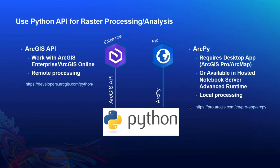Let's do a quick comparison of the different types of Python APIs provided by ArcGIS. There are two main sets of Python APIs offered by ArcGIS products. The first is the ArcGIS API for Python, a Python module you can use to work with ArcGIS Enterprise and ArcGIS Online. It provides methods and functions to submit remote processing requests to ArcGIS Enterprise raster analytics servers or ArcGIS Online analysis servers.